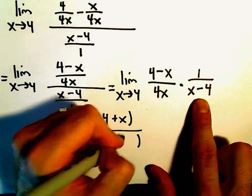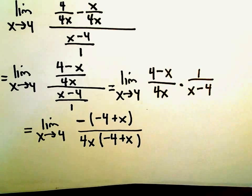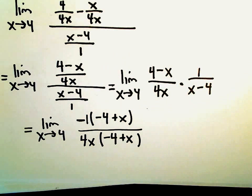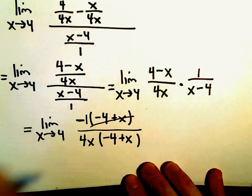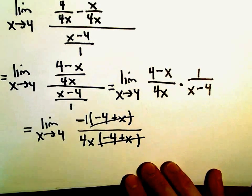Equivalently, we could write that as negative 4 plus x. Again, you could think about the negative as just being a negative 1. So now we can just cancel out the negative 4 plus x. And now we're in a position to evaluate things.